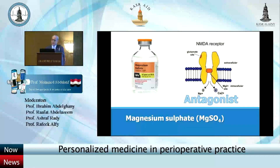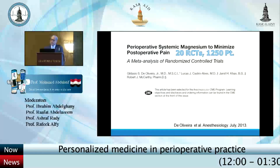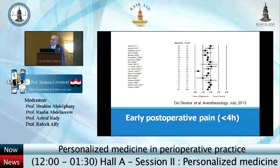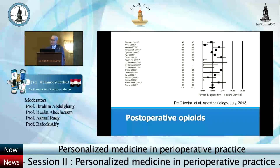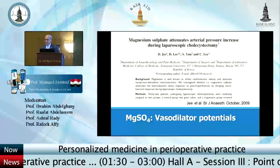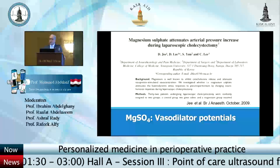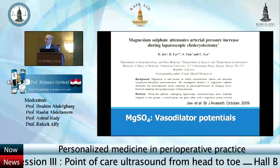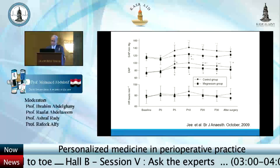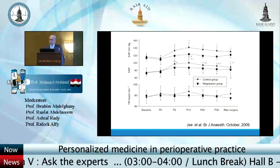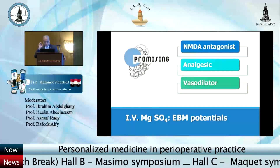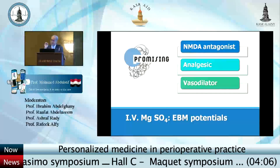Magnesium sulfate is another NMDA antagonist. A systematic review and meta-analysis found that early postoperative pain was better and postoperative opioid consumption was less in patients who received intravenous magnesium infusion. Being a vasodilator, a randomized controlled study in laparoscopic cholecystectomy showed that systolic, diastolic, and mean blood pressure were all lower in the magnesium sulfate group. So magnesium sulfate is an NMDA antagonist with analgesic and vasodilatory effects.